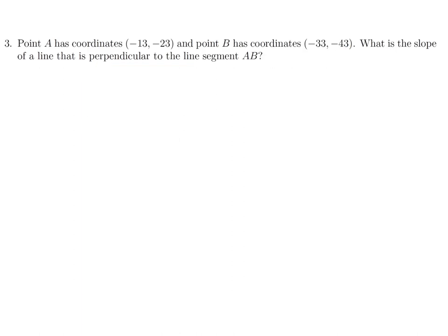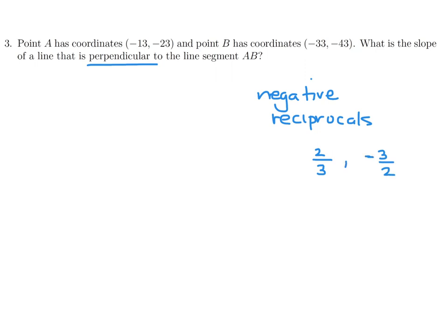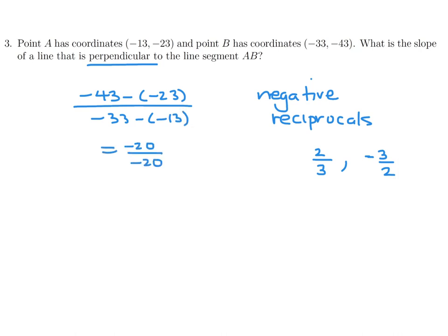Point A has coordinates (negative 1/3, negative 2/3) and B (negative 3/3, negative 4/3). What is the slope of the line perpendicular to segment AB? Perpendicular lines have slopes that are negative reciprocals. The slope of AB is rise over run: (−4/3 − (−2/3)) over (−3/3 − (−1/3)) equals −20 over −20, which is 1. The negative reciprocal of 1 is negative 1.